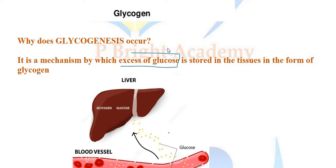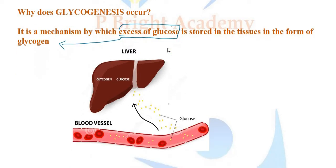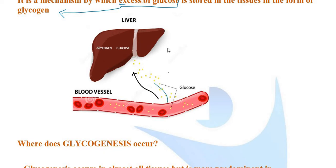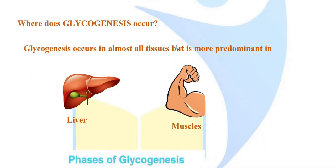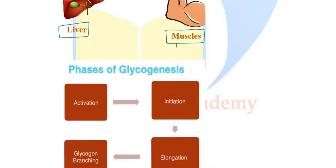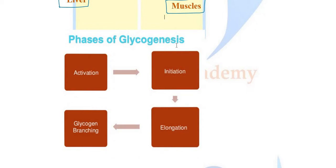If you have excess glucose molecules in your body, glycogenesis takes place. Glycogen is stored in two main sites: one is in the liver and two is in the muscle tissues. The steps of glycogenesis are: activation, initiation, elongation, and glycogen branching, finally forming a huge glycogen molecule.